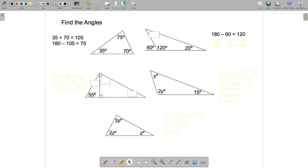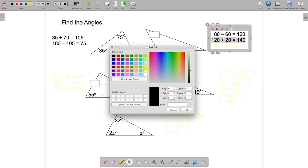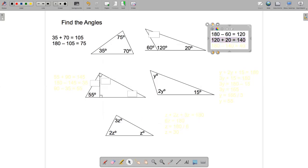And then I'm back in the situation I was with the first example. If I add 120 and 20, I'll get 140. So that final angle inside that triangle must be 180 minus 140, which is 40 degrees.